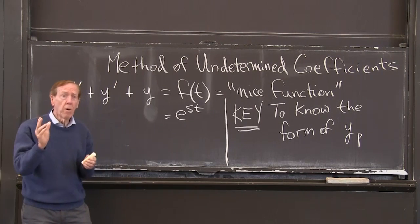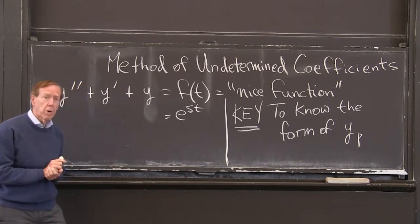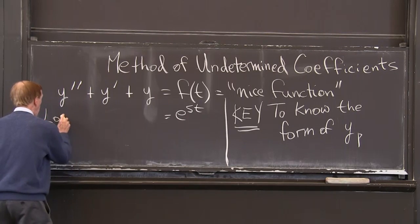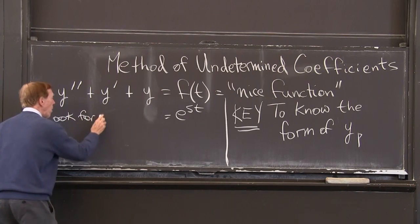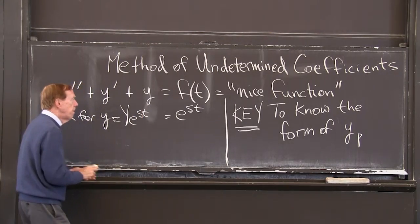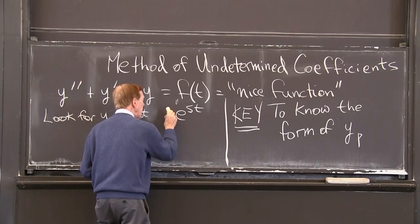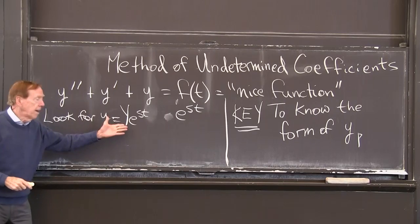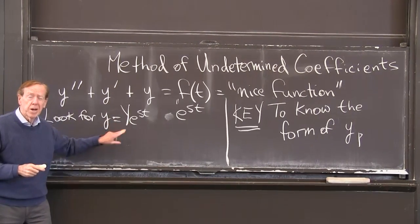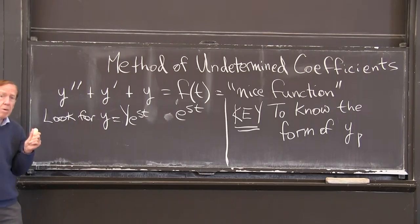The point is we know what to look for. We just have some coefficient to find, and we'll find that by substituting in the equation. Do you remember what we look for when the right-hand side is e to the st? Then look for y equals some constant times e to the st. If f(t) is e to the st, then I just look for a multiple of it. That's one coefficient to be determined by substituting this into the equation.